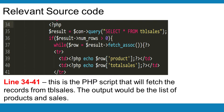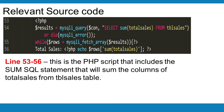Lines 34 to 41: This is the PHP script that will fetch the records from the tbl_sales table. The output would be the list of products and sales. Lines 53 to 56: This is the PHP script that includes the SQL statement that will sum the columns of total sales from the tbl_sales table.